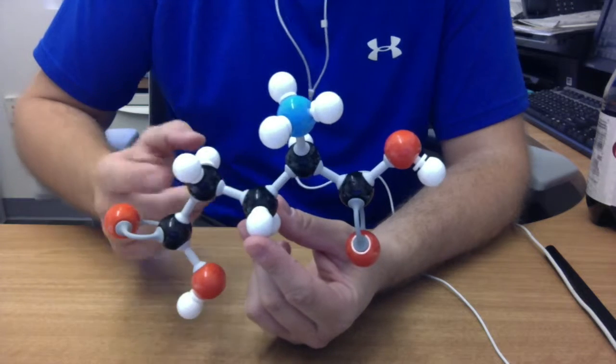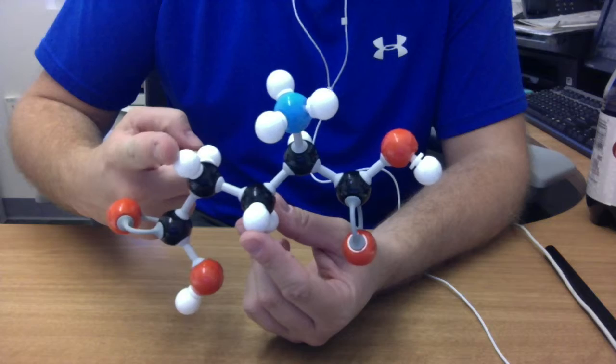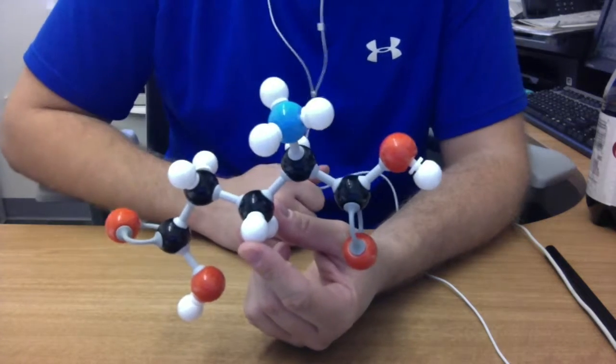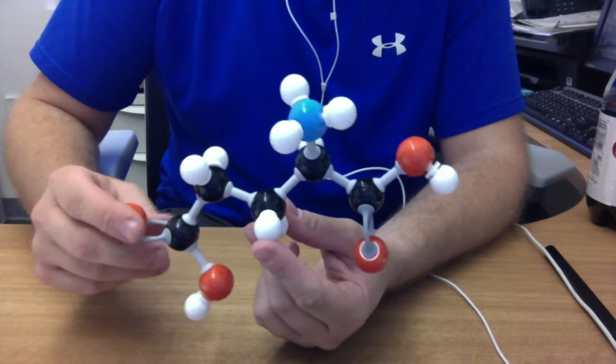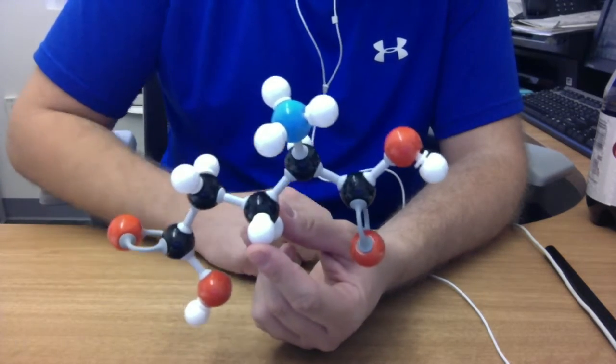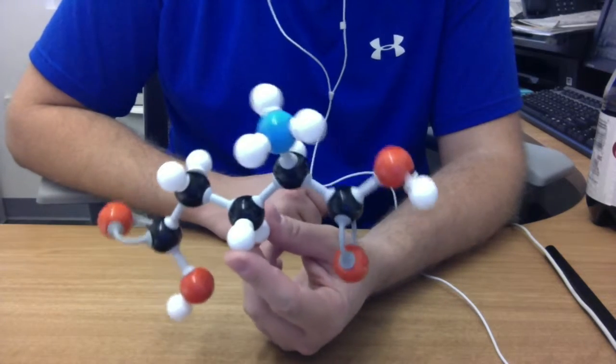Just to reorient you, black is carbon, white is hydrogen, blue is nitrogen, and red is oxygen. These two little things here indicate double covalent bonds. These are single covalent bonds, and of course, hydrogen can only do single covalent bonding.